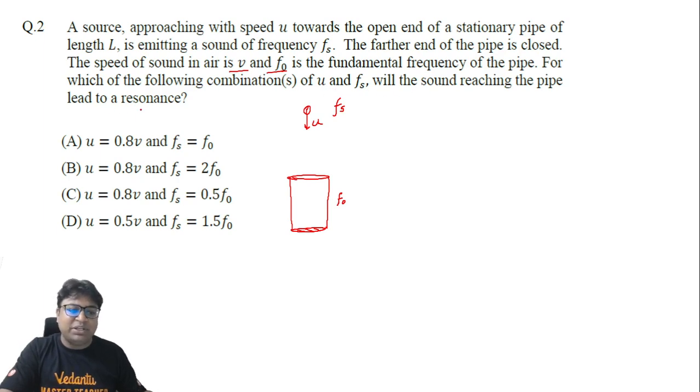For which of the following combinations of u and fs will the sound reaching the pipe lead to a resonance? First of all, we need to understand what is going on here. Because of the motion of the source, the frequency detected at the open end of this pipe will not be equal to fs, it will be slightly different from fs, and to be exact it will be more than the value of fs. We call such frequency as apparent frequency.